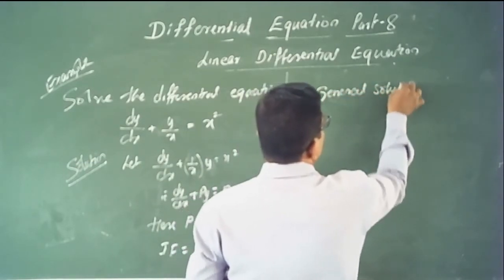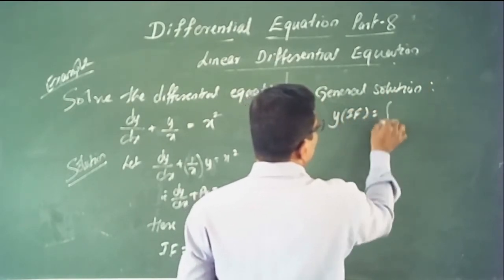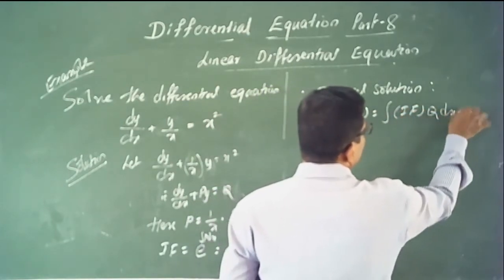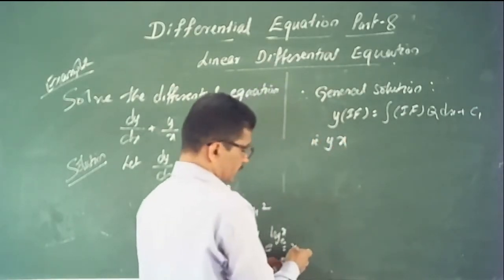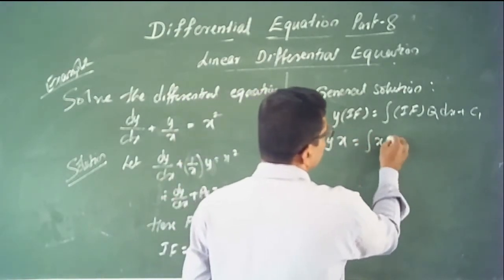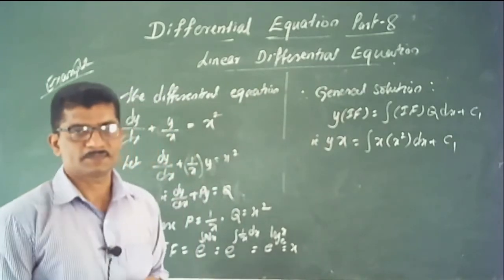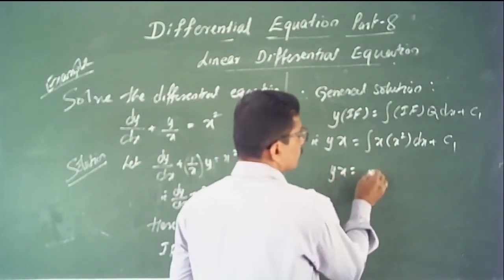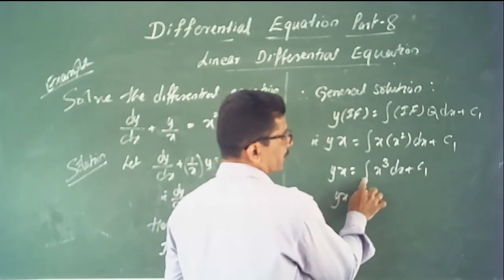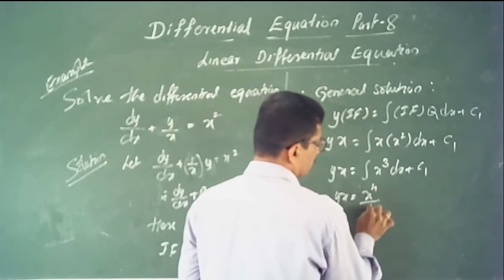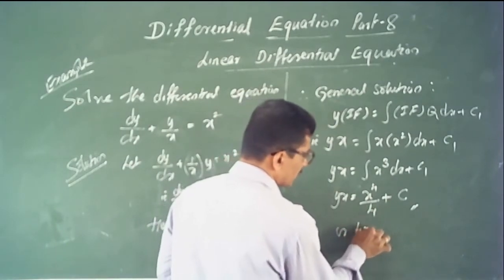Once you find the integrating factor, write the general solution directly: y × I.F. = ∫(I.F. × Q) dx + C. That is, y × x = ∫x × x² dx + C = ∫x³ dx + C. Therefore y·x = x⁴/4 + C.